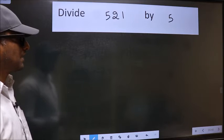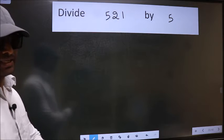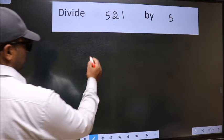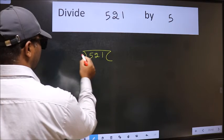Divide 521 by 5. To do this division, we should frame it in this way. 521 here and 5 here.